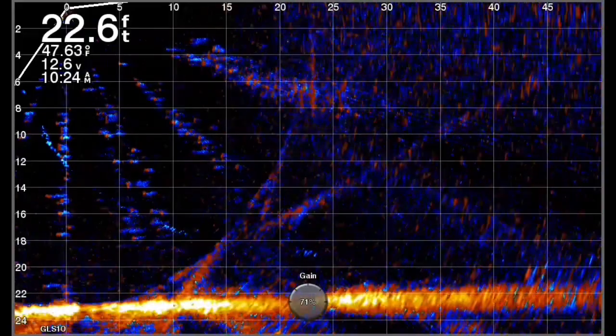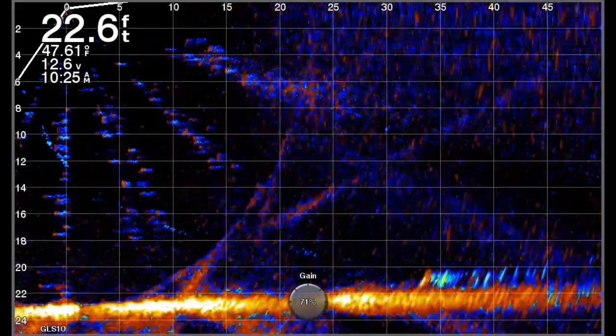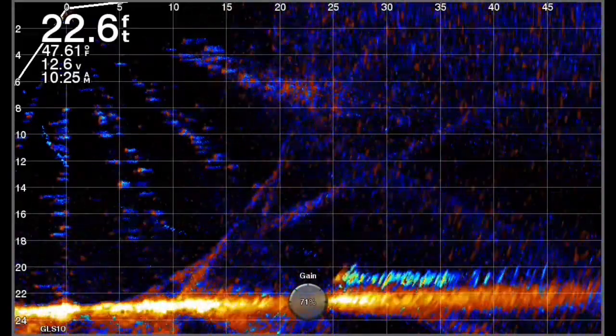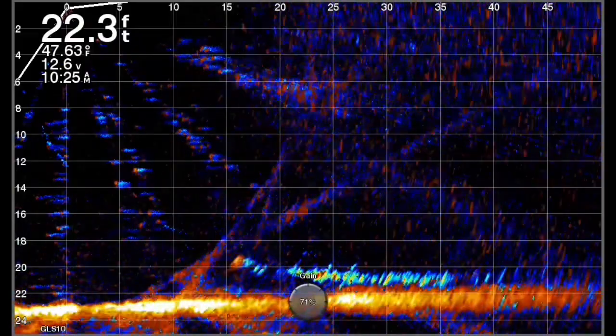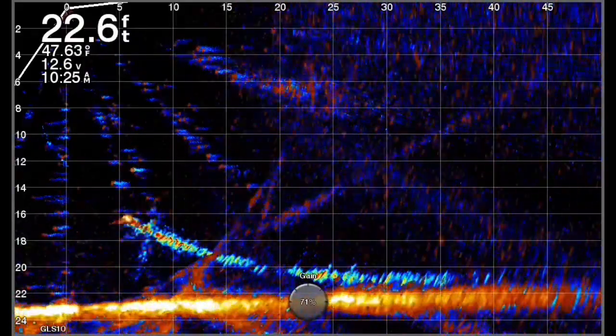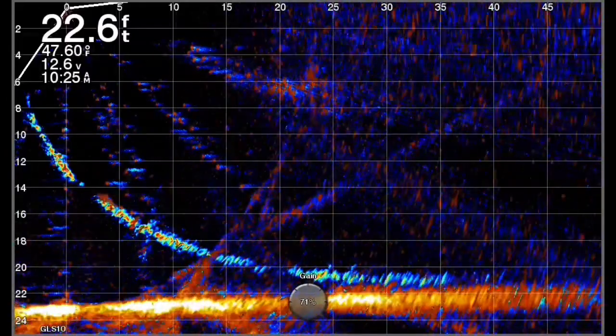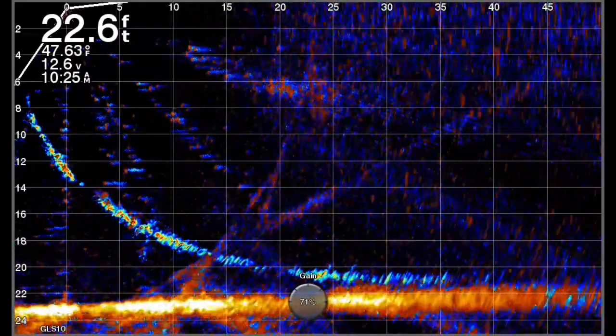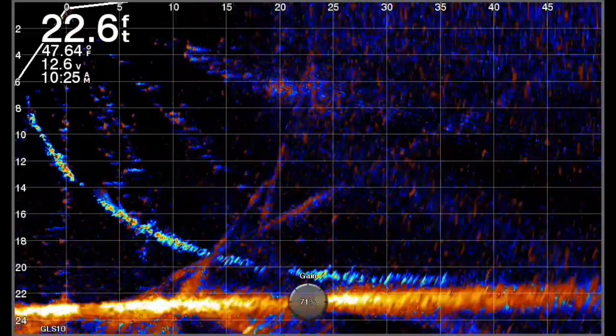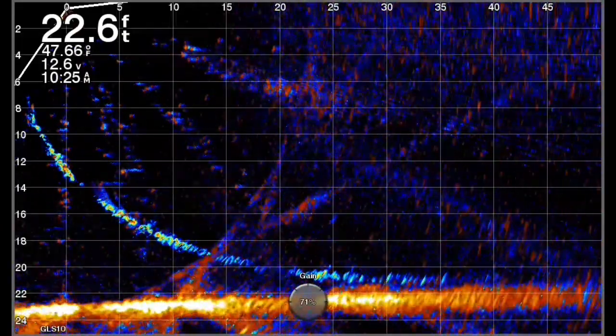But most of them are right there. There comes one right there, look at it touching that 22-foot line. I mean it's dragging almost bottom. That's the double ability: less drag, longer cast.